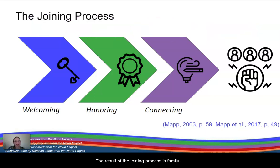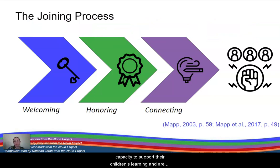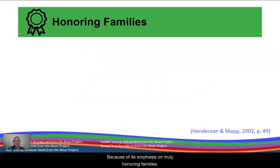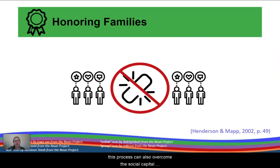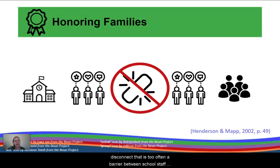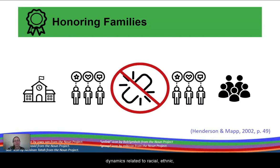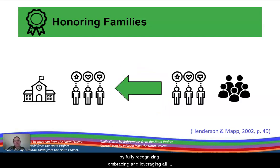The result of the joining process is family empowerment. Families have an increased capacity to support their children's learning and are more excited about partnering with school staff. Because of its emphasis on truly honoring families, this process can also overcome the social capital disconnect that is too often a barrier between school staff and the families they serve due to historical power dynamics related to racial, ethnic, religious, socioeconomic, and linguistic differences — by fully recognizing, embracing, and leveraging all of the assets families bring to the school community.